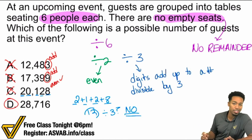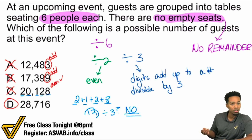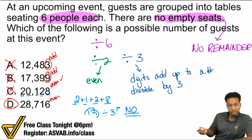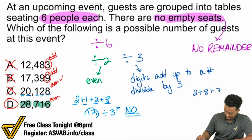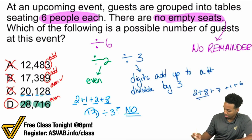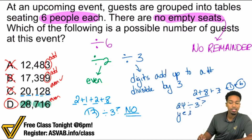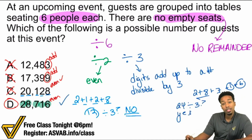So by default, D is going to be correct. We have 28,716. We know the six means it's even. So just take those digits and add them up: two plus eight plus seven plus one plus six. Add those all up — we get 10, 17, 18, 24. Is 24 divisible by three? Yes, it is. And that's why D is the answer.